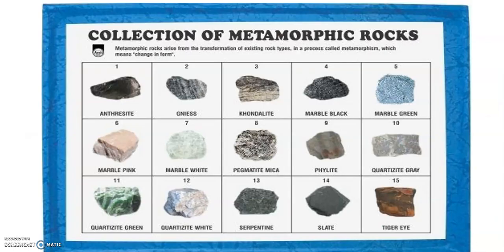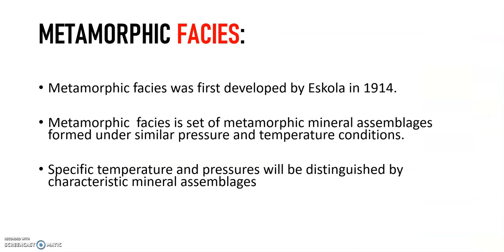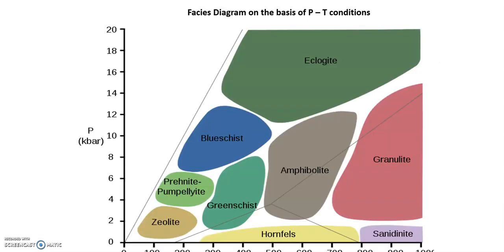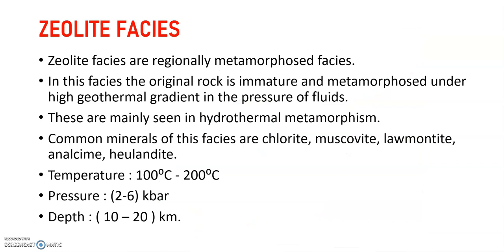Here are some pictures of metamorphic rocks. Metamorphic facies was first developed by Eskola in 1914. Metamorphic facies is a set of metamorphic mineral assemblages formed under similar pressure and temperature conditions. Specific temperature and pressure conditions are distinguished by characteristic mineral assemblages. The main use of understanding metamorphic facies is to clearly know what minerals and mineral assemblages were formed under certain pressure and temperature conditions. Here is the list of major facies granted by IUGS — the International Union of Geological Sciences — along with a facies diagram based on pressure and temperature conditions.